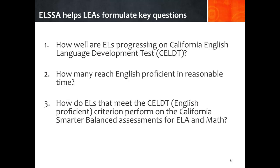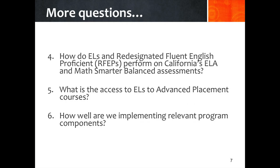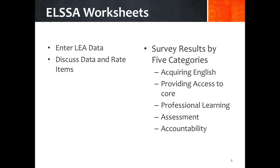Here are six possible questions that emerge from doing the process of the ELSA to help local education agencies or districts indicate the strengths and weaknesses of their services to English learners. The ELSA has worksheets for local education agencies or districts to input data, a separate worksheet for staff to view the data and respond to guiding questions, and survey items related to English learner program services in five categories.